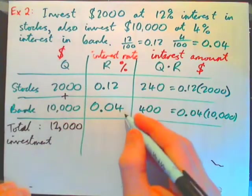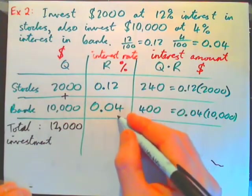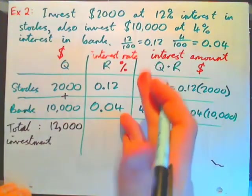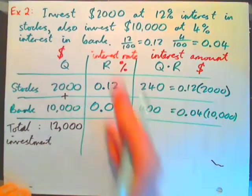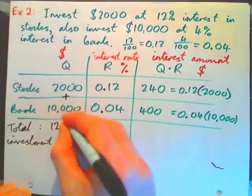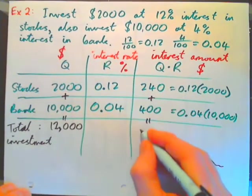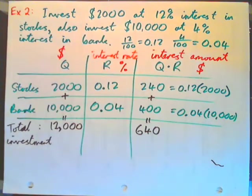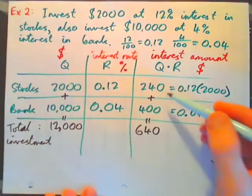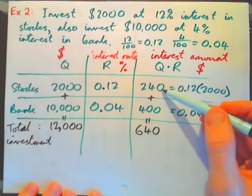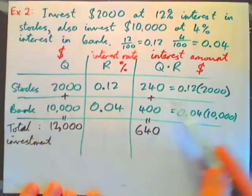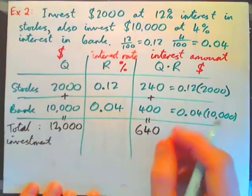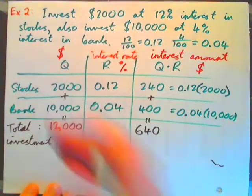Then we come to the rate column. Adding 12% plus 4% gives us 16% interest. That 16% means nothing. You cannot add these together to get anything that makes any sense. So you don't add these. So you add these numbers to get that, and then you add these numbers to get 640. Now, what does that represent? Well, 240 represented what? The interest amount from the stocks. 400 represented the interest amount from the bank. So 640 is the total amount of interest that we got at the end of the year from the combined investments.